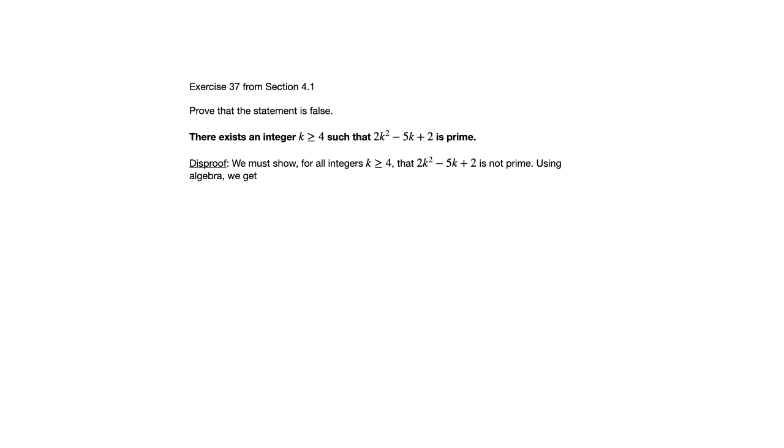Now we're going to do some algebra. The algebra here is factoring that. Let me say something about how would we know we need to factor this. This is a proof about prime, whether an integer is prime or not. The definition of prime has to do with factoring. So anytime you've got something involving prime or composite, factoring is at the heart of those concepts. So we're going to take this polynomial and factor it. It factors as (2k - 1)(k - 2).